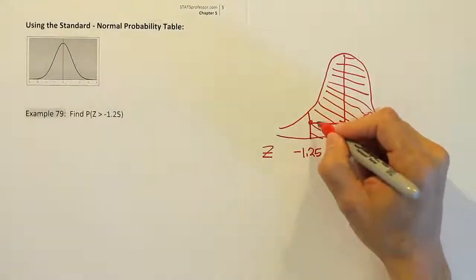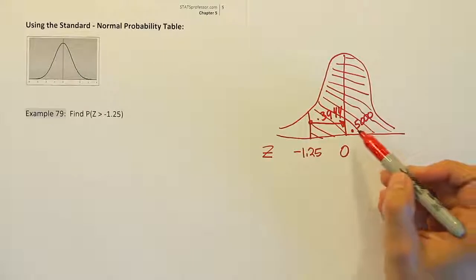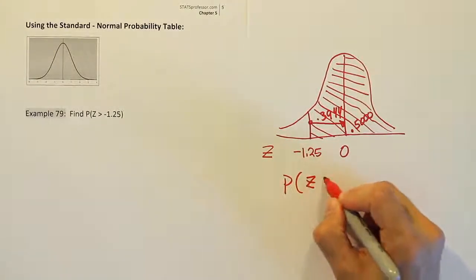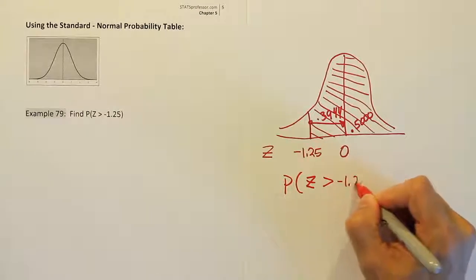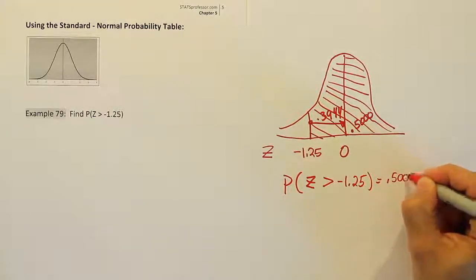Okay so we found 0.3944 or 39.44%. So the probability that our z-score value is greater than negative 1.25 will be equal to 0.5 plus 0.3944.